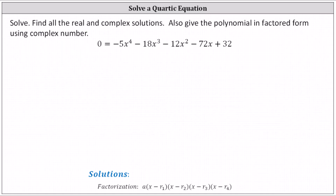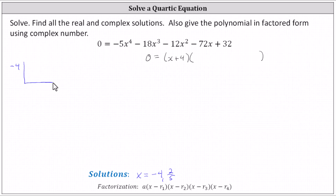Let's record these two real rational solutions: x equals negative four, as well as x equals two fifths. Because x equals negative four is a solution, this means x minus negative four, or x plus four, would be a factor of the polynomial on the right. So let's write the equation as zero equals the quantity x plus four times some degree three polynomial. We'll find this degree three polynomial by dividing the degree four polynomial by x plus four using synthetic division. To perform synthetic division, we use the solution of negative four and then list out the coefficients of the polynomial: negative five, negative 18, negative 12, negative 72, and the constant of 32.